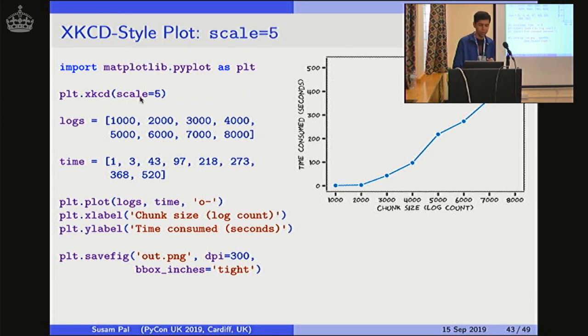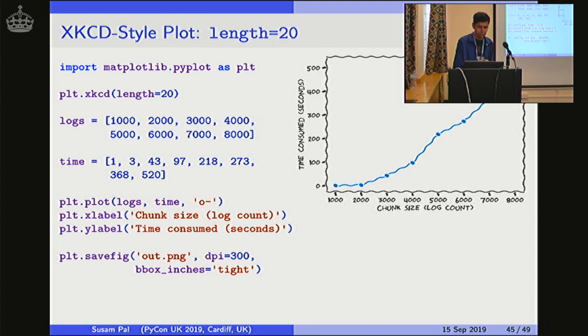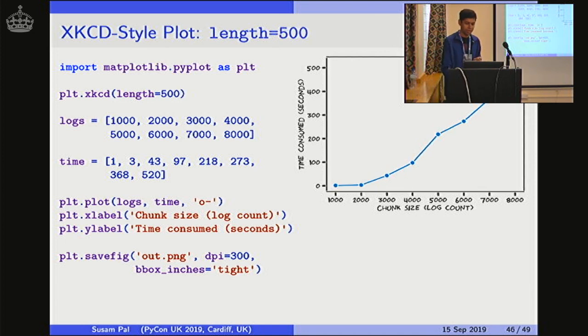So scale, mind you, is the amplitude. So when I increase the scale to 5, the wiggles are a little bit more prominent. If the scale is 0.2, which I've reduced the scale, the wiggles are so subtle that they almost look like straight lines now. This is the wiggle length. So I've decreased it to 20, so the wiggles are shorter. But if I increase it to something like 500, the wiggles are so long that they again look like straight lines.